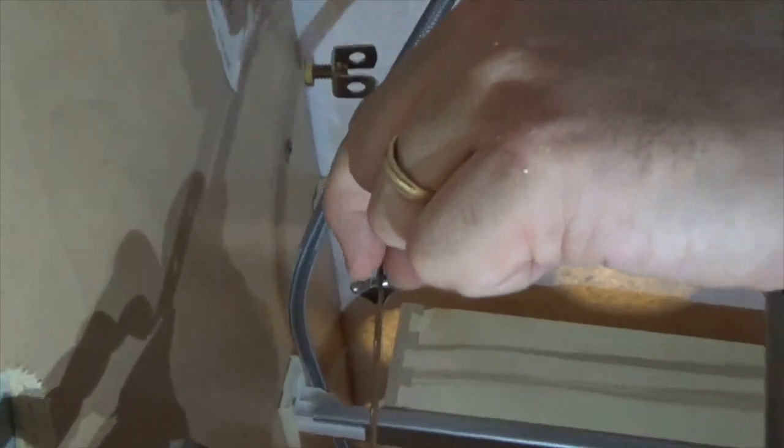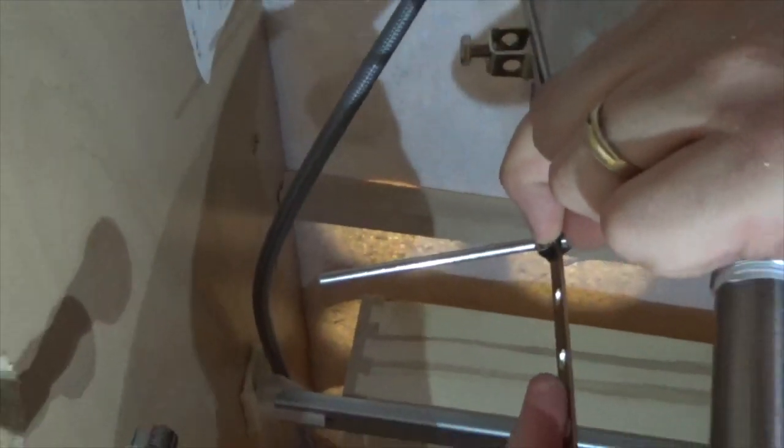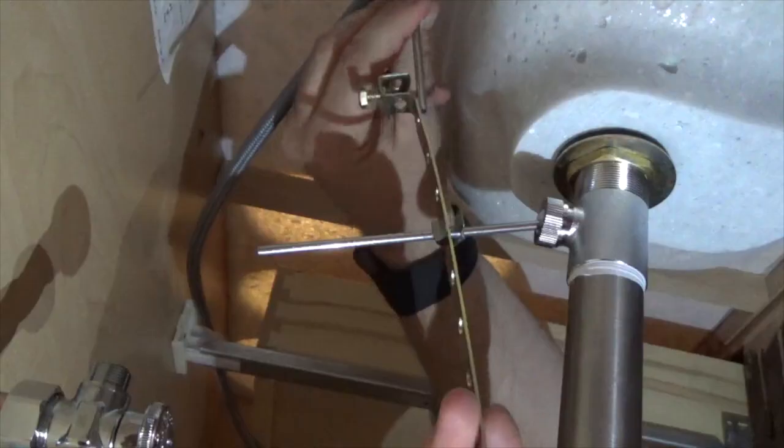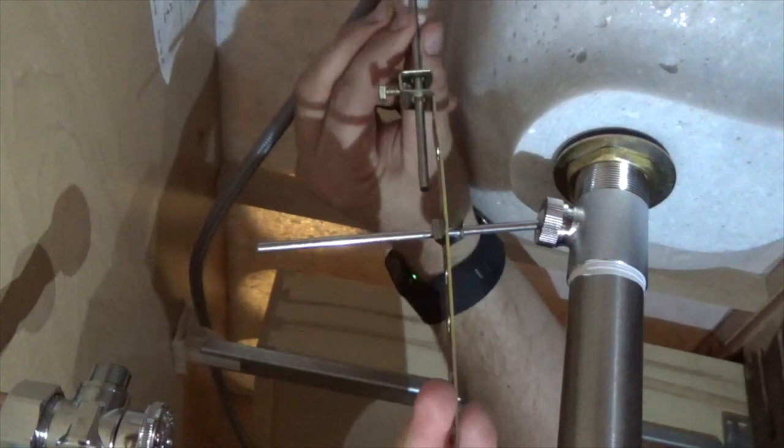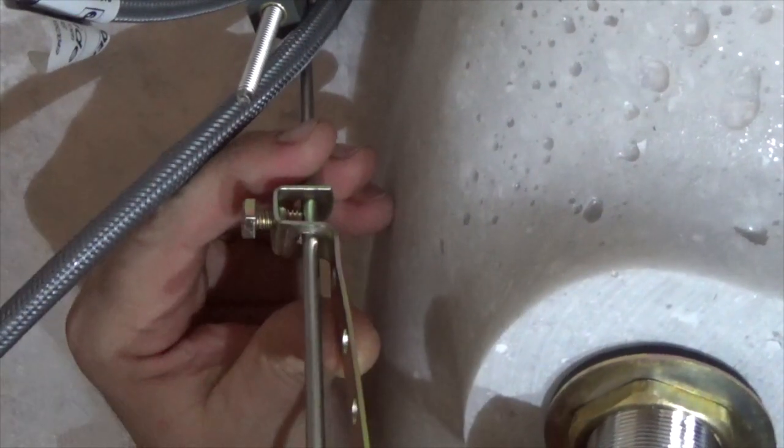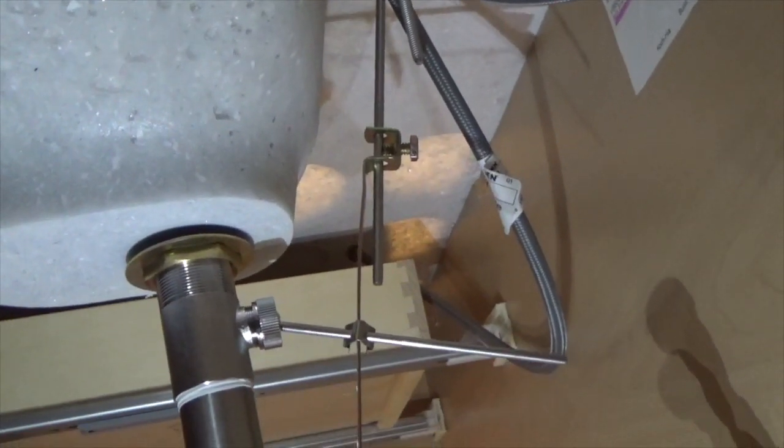Once again, squeeze the clip and slide the strap up the pivot rod until it aligns below the lift rod. Return the lift rod to the strap and tighten into place using a wrench. Check the function of the stopper by pulling the lift rod up and down.